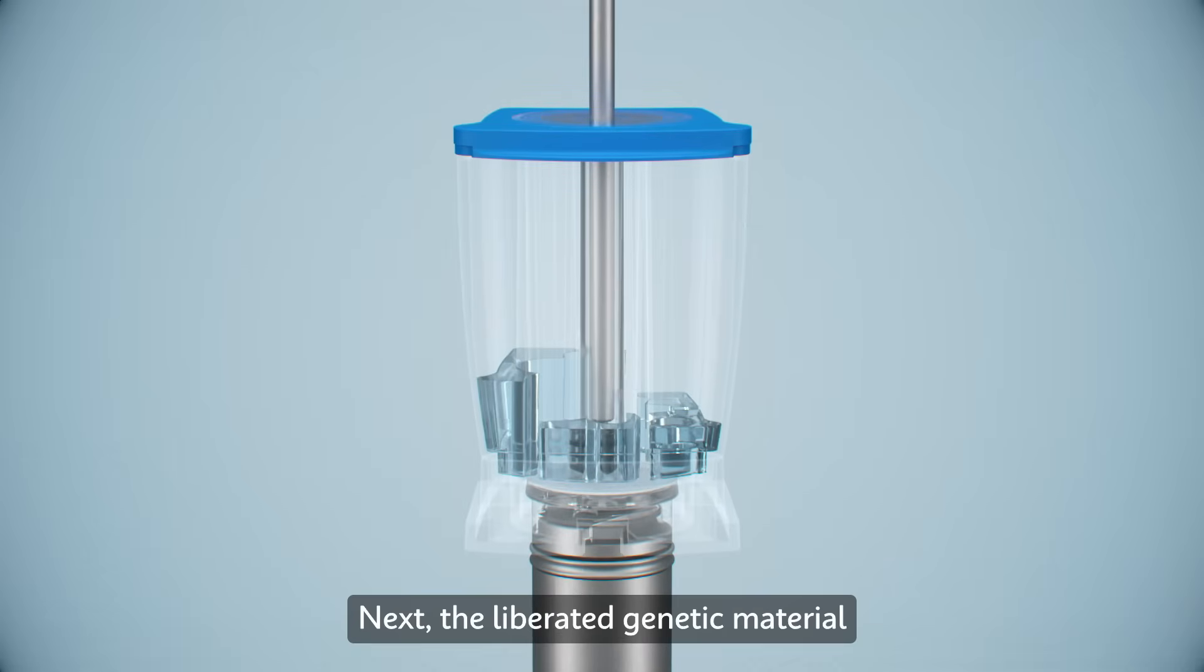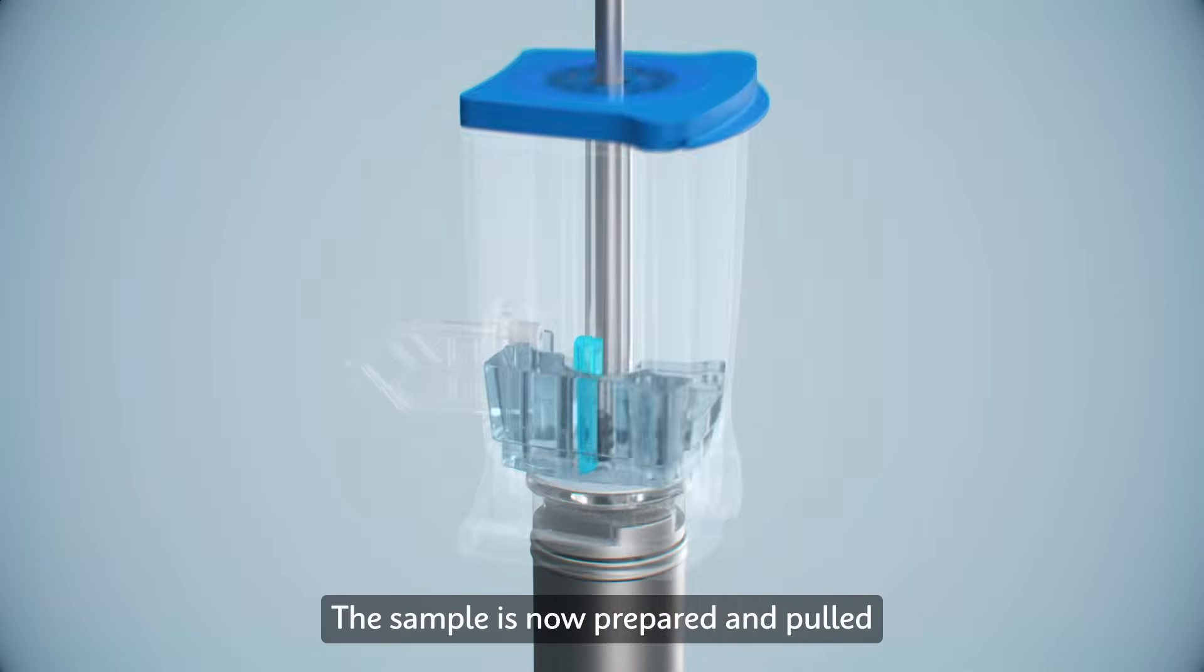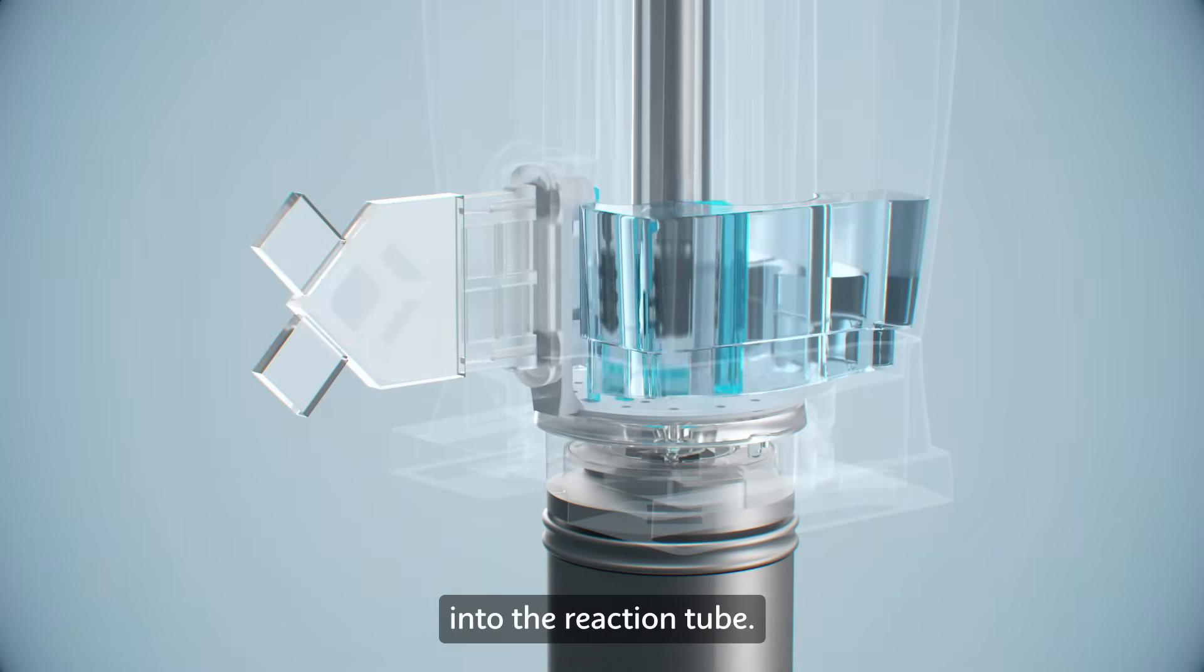Next, the liberated genetic material is pushed into the chamber containing reaction beads. To mix the solution, the plunger cycles the fluid to dissolve the beads. The sample is now prepared and pulled into the reaction tube.